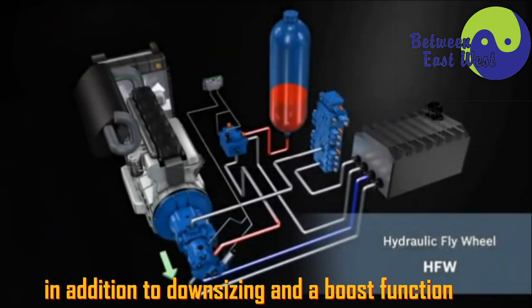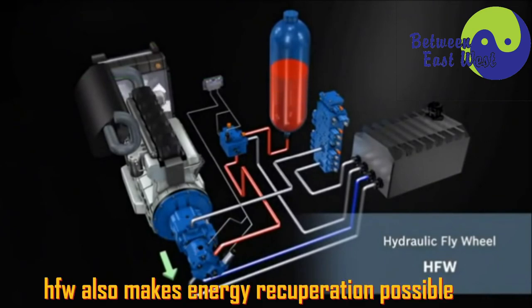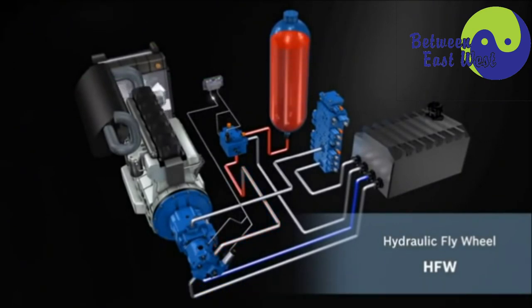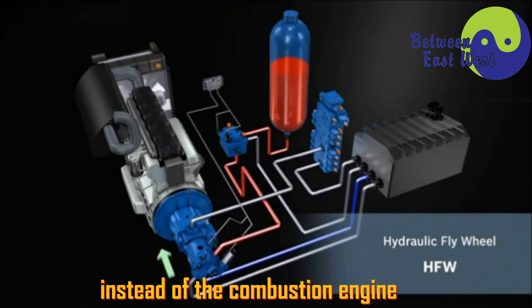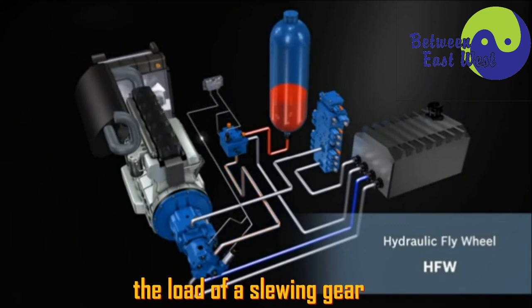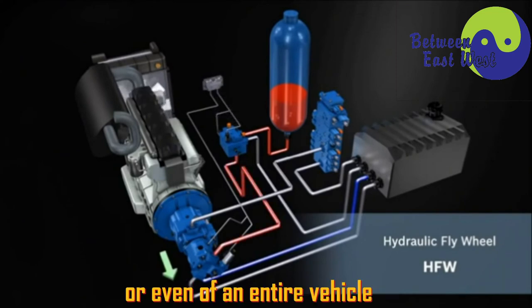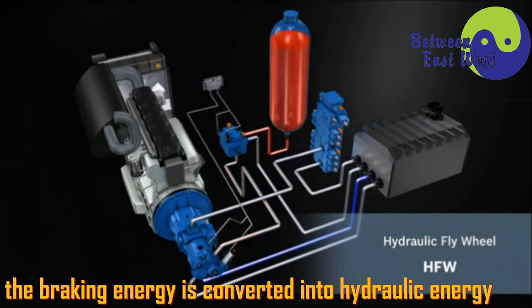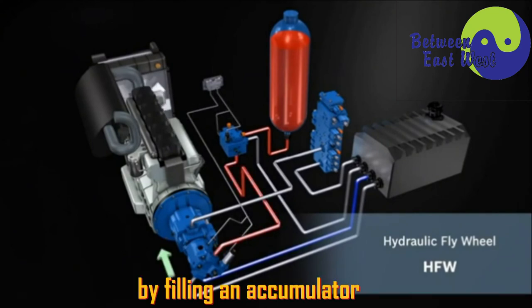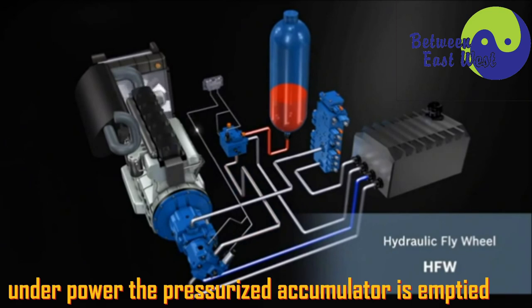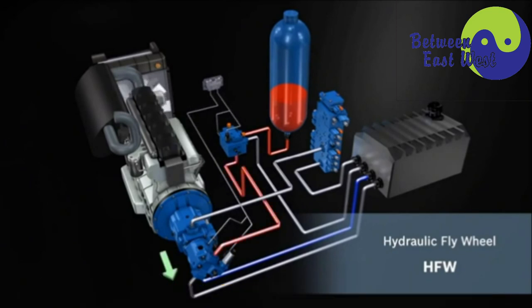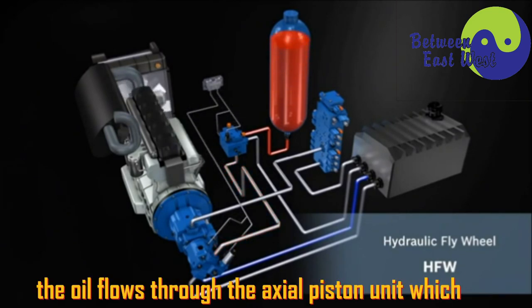In addition to downsizing and a boost function, HFW also makes energy recuperation possible. Instead of the combustion engine, the hydraulic flywheel brakes the load of a slewing gear in the closed circuit, or even of an entire vehicle. The braking energy is converted into hydraulic energy by filling an accumulator. Under power, the pressurized accumulator is emptied. The oil flows through the axial piston unit, which is...